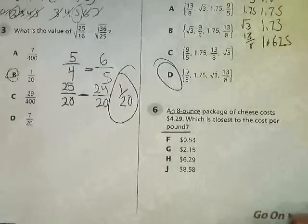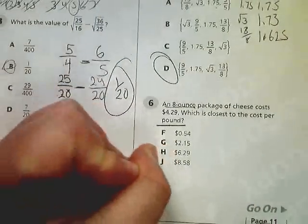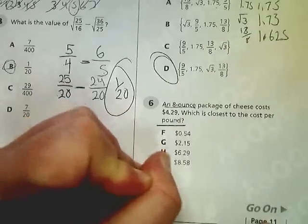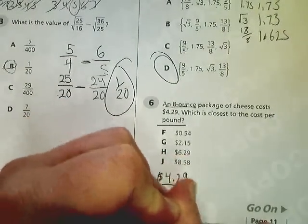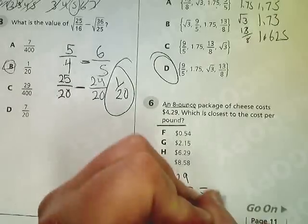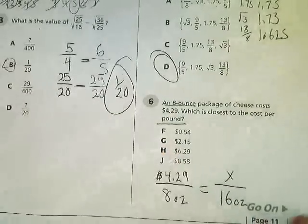So a really simple way you can do this one, since they're only changing ounces to pounds and the dollar stays the same, is I'm going to create a proportion for myself. $4.29 for 8 ounces. Now I know that one pound is 16 ounces, so I'm going to do that over x.